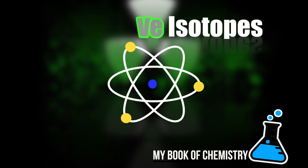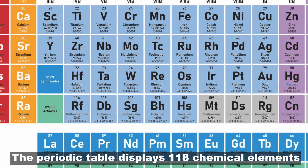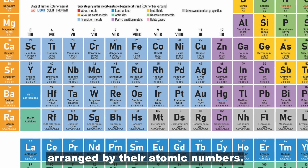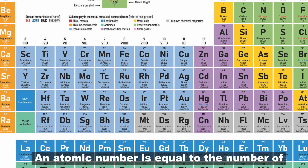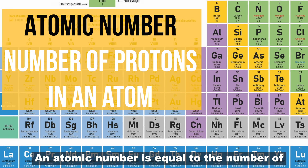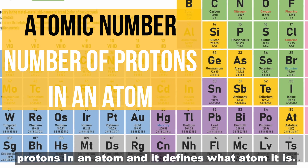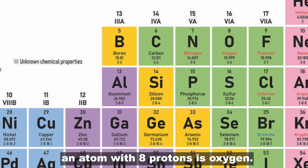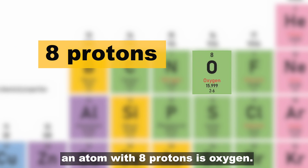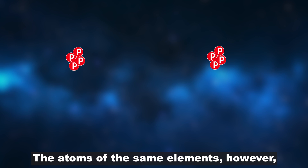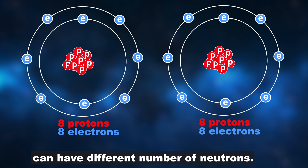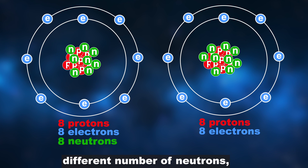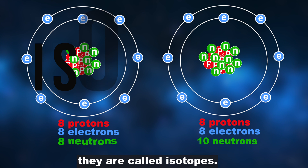So what are radioactive isotopes? The periodic table displays 118 chemical elements arranged by their atomic numbers. An atomic number is equal to the number of protons in an atom, and it defines what an atom is. For example, an atom with 8 protons is oxygen. The atoms of the same elements, however, can have different numbers of neutrons. When the atoms of the same element have different numbers of neutrons, they are called isotopes.